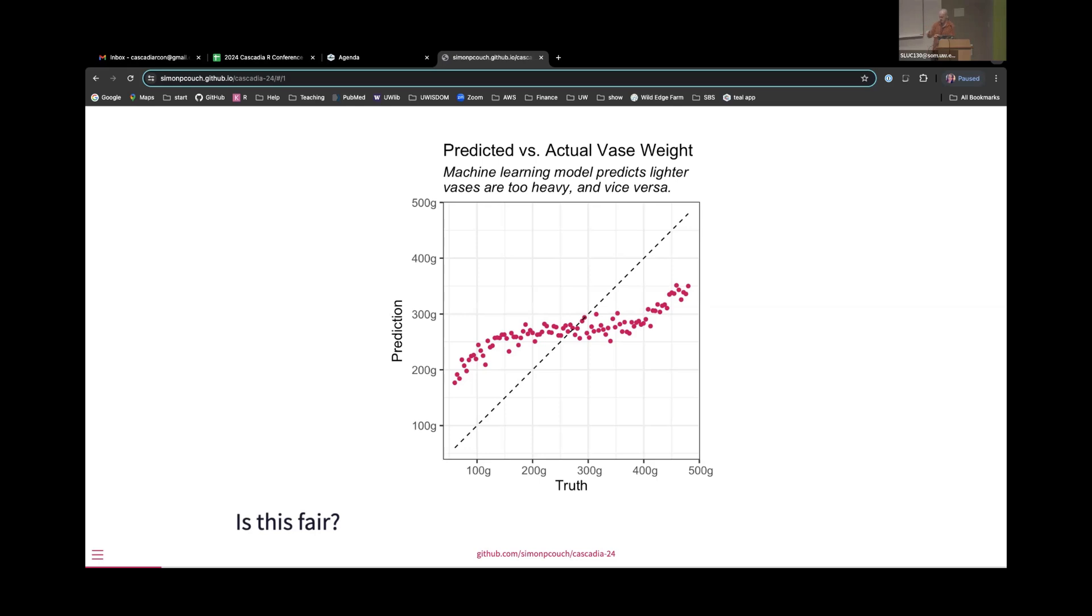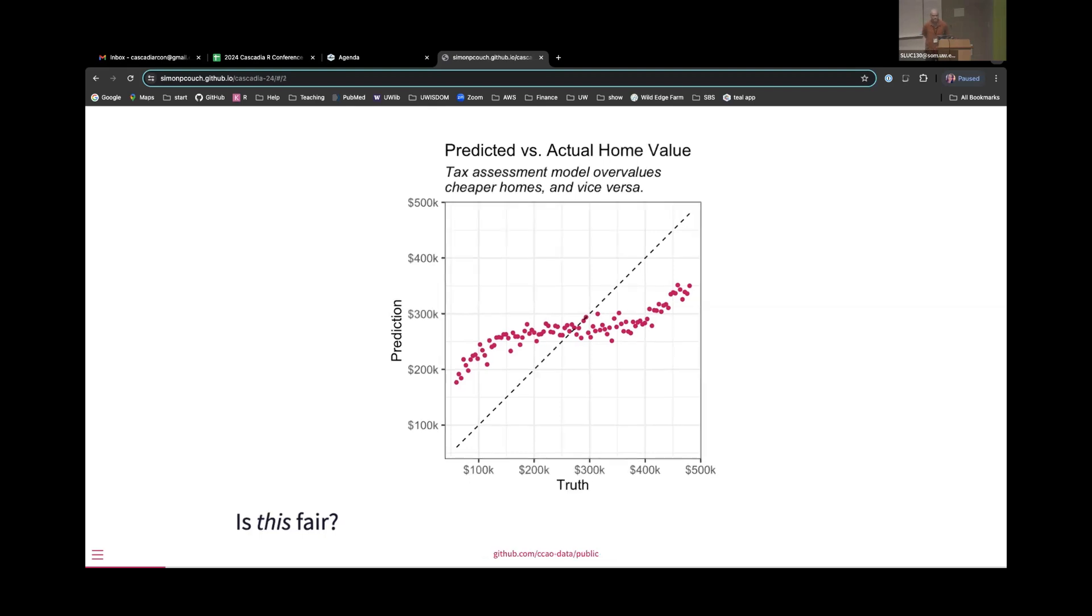So I'm going to pull a little magic trick now. I'm going to change the title and the subtitle and the labels on the axis ticks in this plot. This model is actually used in property assessment to generate property taxes, and what we're seeing is that the homes that are less expensive, we're living in some sort of world where houses are between $100,000 and $500,000. So for those less expensive houses, we're tending to overpredict the value of the home, and on the other end of the distribution for the more expensive houses, we are tending to underpredict the value of that home. So I'm going to ask the same question now. Is this fair?